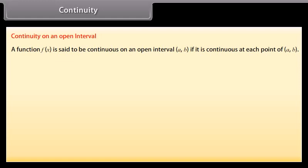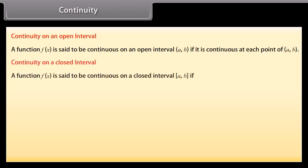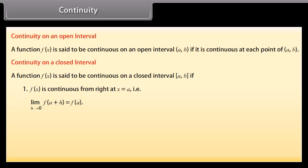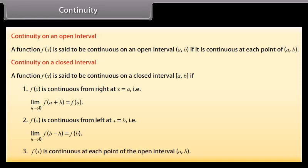Continuity on an open interval: A function f(x) is said to be continuous on an open interval (a, b) if it is continuous at each point of (a, b). Continuity on a closed interval: A function f(x) is said to be continuous on a closed interval [a, b] if: 1. f(x) is continuous from the right at x = a, that is, limit h approaches 0 of f(a + h) = f(a); 2. f(x) is continuous from the left at x = b, that is, limit h approaches 0 of f(b − h) = f(b); 3. f(x) is continuous at each point of the open interval (a, b).